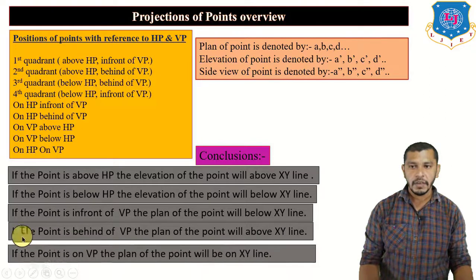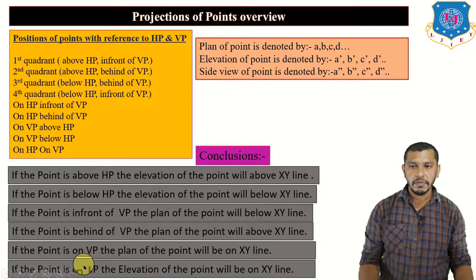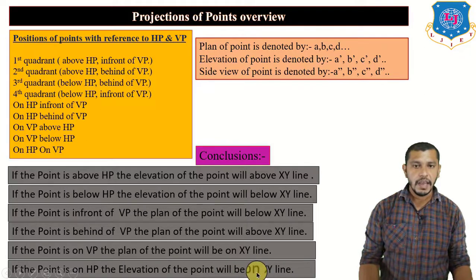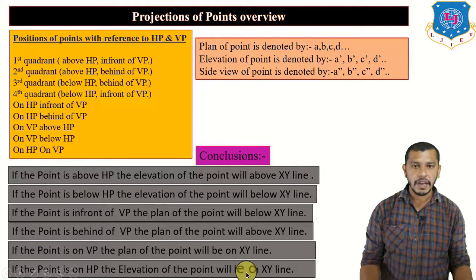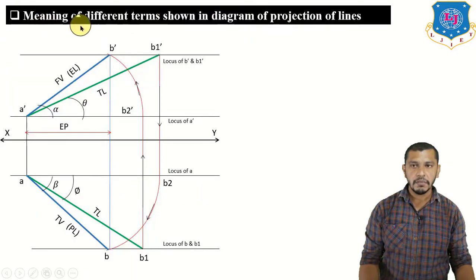If the point is on VP, the plan will be on the XY reference line. If the point is on HP, the elevation will be on the XY reference line. If the point is on both HP and VP, then both the plan and elevation will be on the XY reference line.